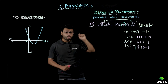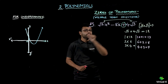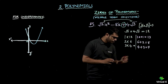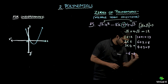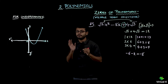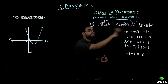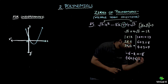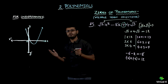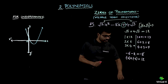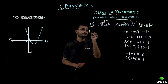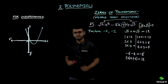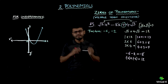Now think about the signs. We need the sum to be −8 and the product to be +12. If we take −6 and −2: −6 + (−2) = −8, and (−6) × (−2) = +12. So my factors are −6 and −2.